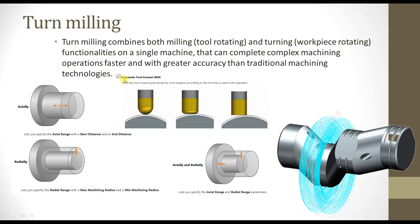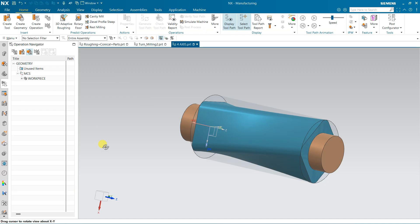One more thing: automatic tool contact shift. If you enable it, it will automatically adjust according to the part. If you want to shift manually, you have to enter the value. The tool will cut uniformly on the cylinder.